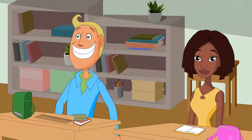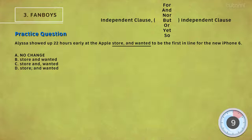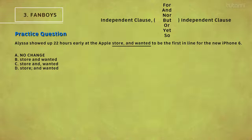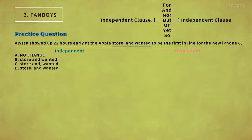Ready for one on your own now? Sure! Welcome back. In order to answer this question, I split up the sentence into its unique clauses and find that one of the halves is dependent. If I read the first half — 'Alyssa showed up 22 hours early at the Apple Store' — it sounds complete. If I read the second clause alone — 'wanted to be the first in line for the new iPhone 6' — it sounds incomplete. Therefore, any independent clause matched with a dependent clause requires no comma, making B our answer.